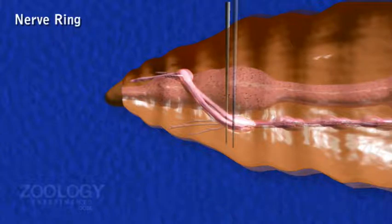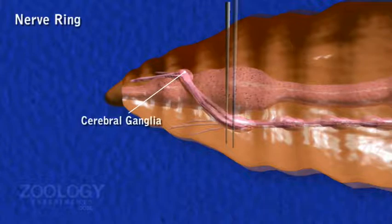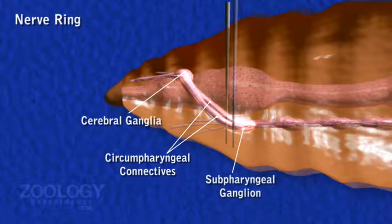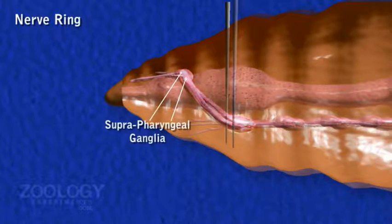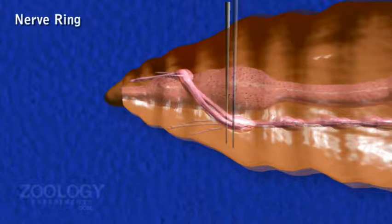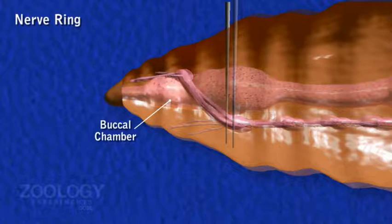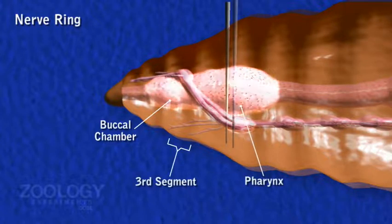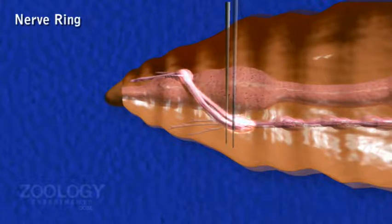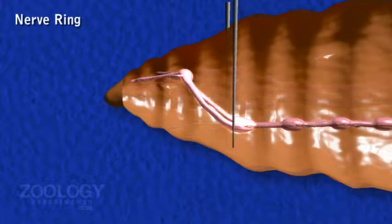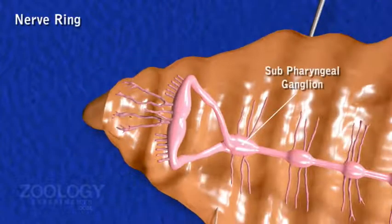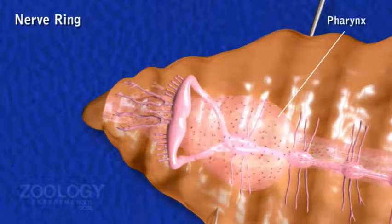The Nerve Ring consists of paired Cerebral Ganglia, Circumpharyngeal Connectives, and Subpharyngeal Ganglia. A pair of closely attached pear-shaped suprapharyngeal ganglia form the brain, lying dorsally in a depression between the Buccal cavity and Pharynx in the third segment. A pair of thick stout circumpharyngeal connectives arise from them laterally, taking up the pharynx and meeting ventrally in a pair of fused subpharyngeal ganglia lying beneath the length of the pharynx in the fourth segment.